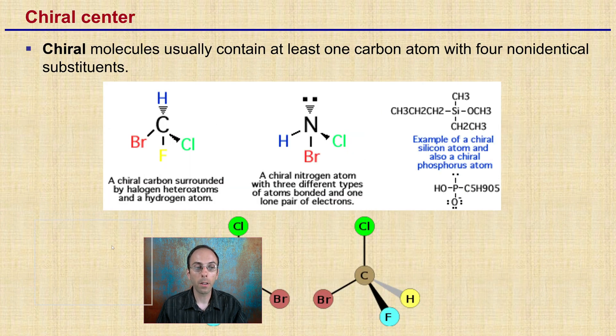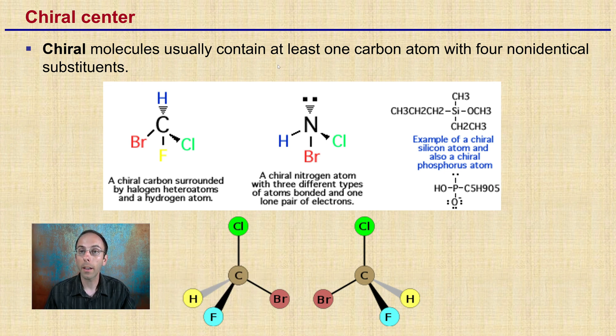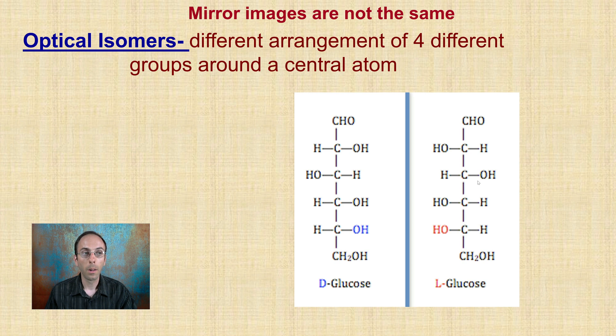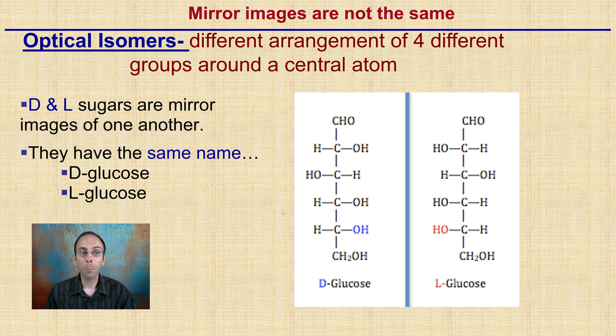That chiral center, as I mentioned, molecules consist of at least one carbon atom and four non-identical things attached to its substituents. So this is allowing this chiral, this four different attachment points, allows there to be a kind of a left side and a right side, a difference amongst those. So that chiral center is that carbon with the four different items attached to it. Optical isomers, mirror images are not the same. So this is an important correlation here. These are mirror images of one another, but they're not the same. They're a different arrangement of the four different groups around that center atom that we see located right here. D and L sugars are mirror images of one another. They have the same name, D-glucose and L-glucose, but different enzymes would be required to break those down.